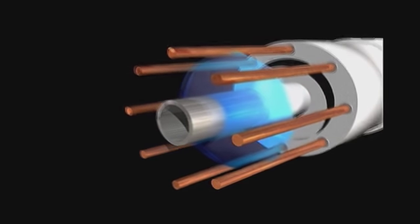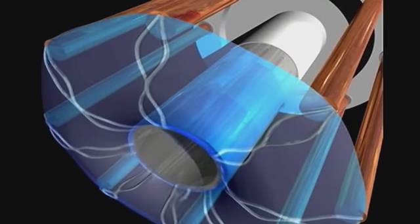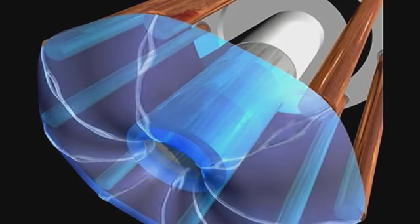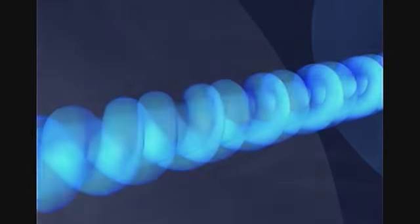Instabilities first compress the plasma into dense filaments. These filaments are little whirlwinds of current. The sheath of filaments merges together into a dense pinch or focus, combining all the filaments into one.